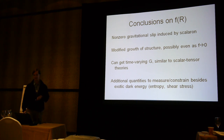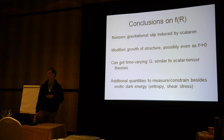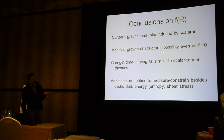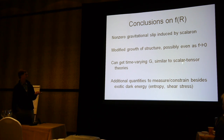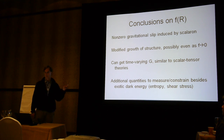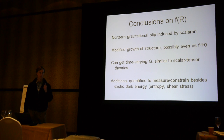To summarize the conclusions about f(R) theories: there is a non-zero gravitational slip induced by the scalaron, so we want to measure the gravitational slip and other things that would distinguish between a scalaron and stressed dark energy. There will be modified growth of structure — clear from modifications of the Poisson equation — and the interesting question is whether those modifications persist even in the limit f → 0 as a singular limit different from GR. These theories characteristically have a time-varying gravitational constant, similar to scalar-tensor theories, as we'll see. They tell us there are additional quantities to measure — the scalaron being one. Although I've discussed this in the context of f(R) theories, these features are quite generic and apply to probably all higher-order theories of gravity.